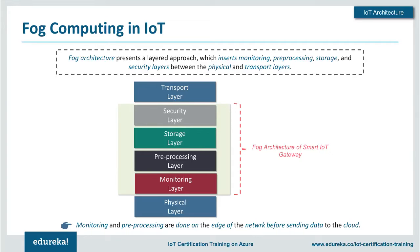Between the physical layer and transport layer in fog computing, we have a monitoring layer, a pre-processing layer, a storage layer, and a security layer. For example, in an IoT-based traffic system, if an ambulance arrives at a signal, fog computing allows pre-processing and storage at the gateway level itself. The sensor information goes to the gateway, which pre-processes it and sends responses back to corresponding sensors — enabling an entire green-light path to be created for the ambulance.